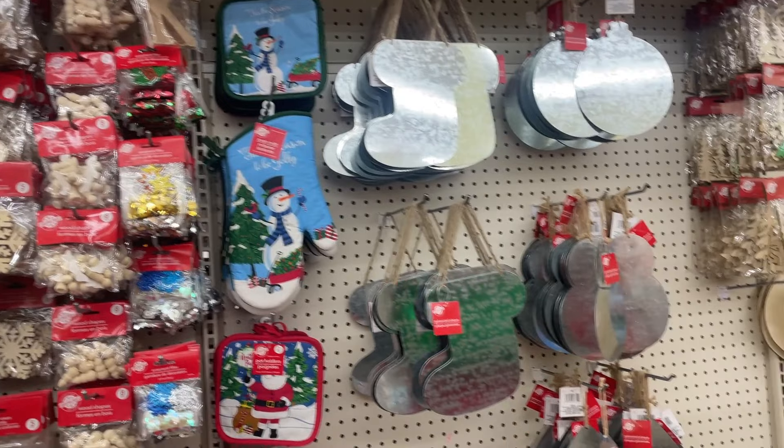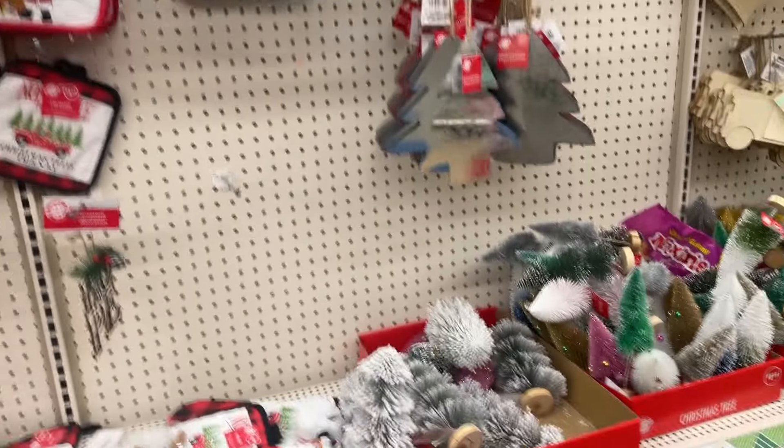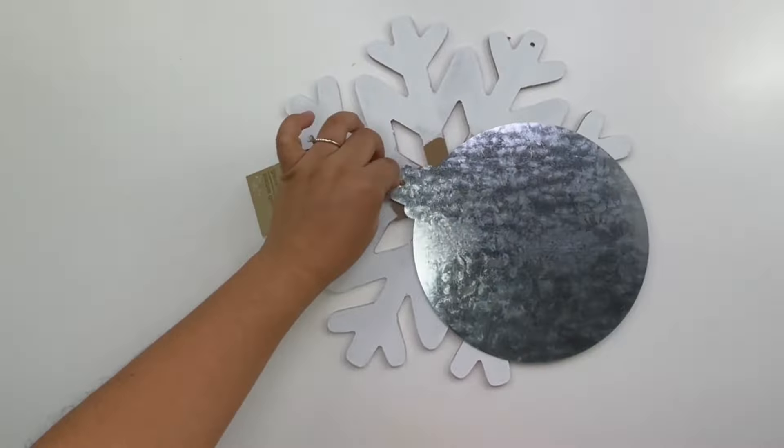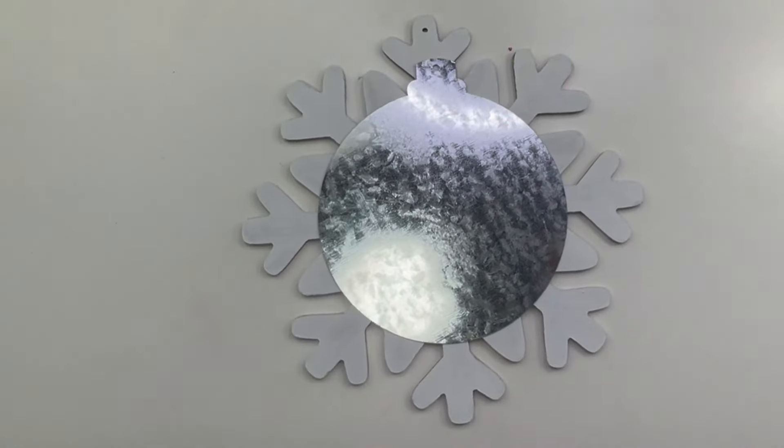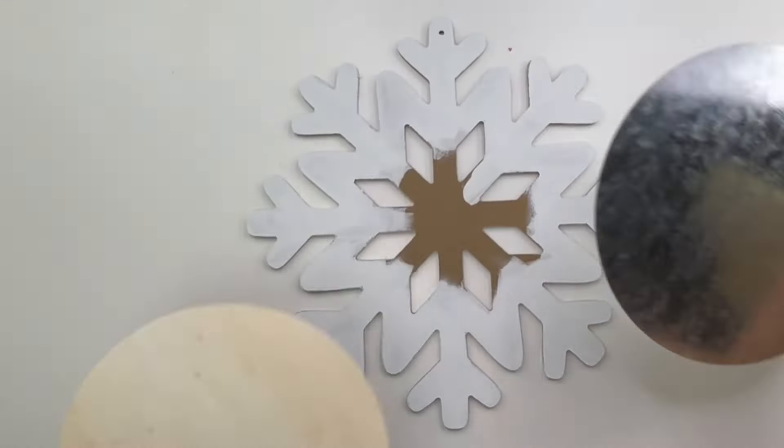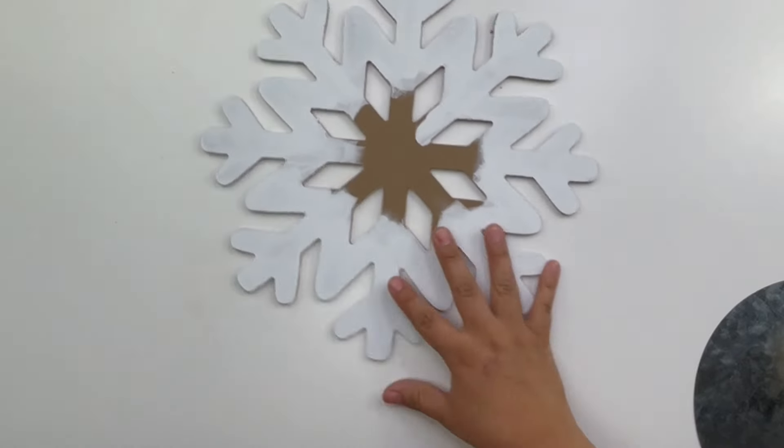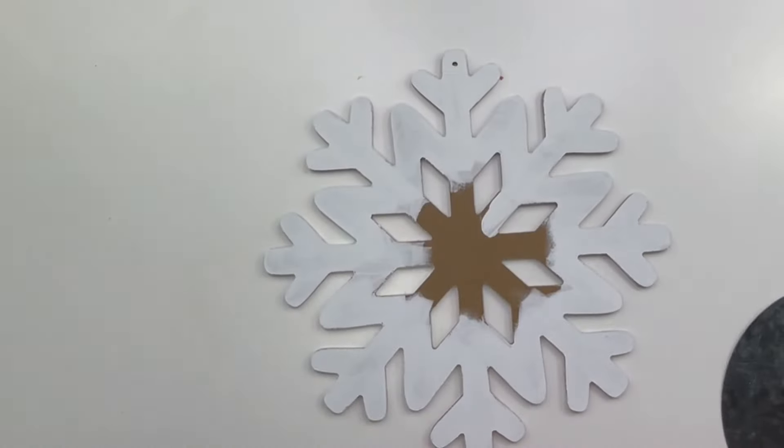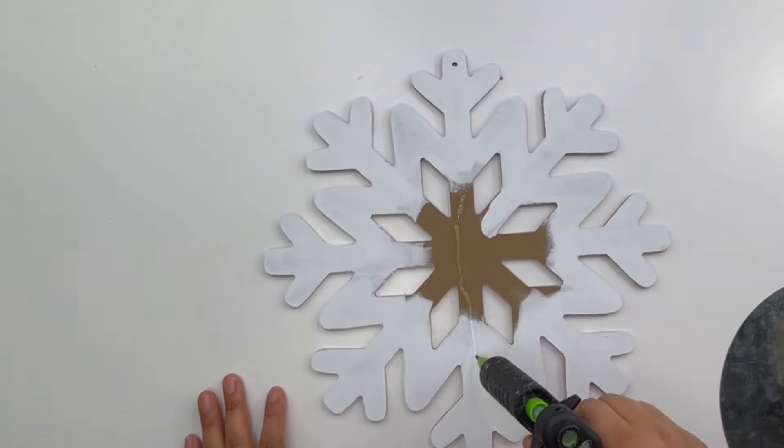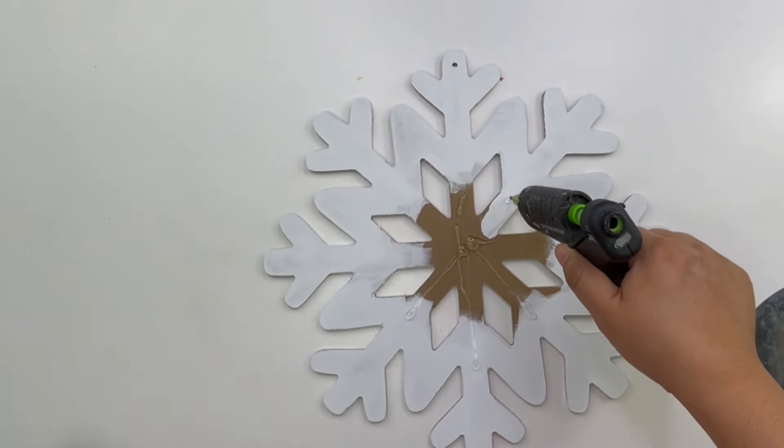And that something else is one of those galvanized ornaments that Dollar Tree is carrying right now. I'm going to just glue it in the center of my snowflake. Honestly if you can't find the galvanized ornaments you can just use any wood circle to add in the center. So now I'm going to just glue this here. I did use a lot of hot glue since this is metal.